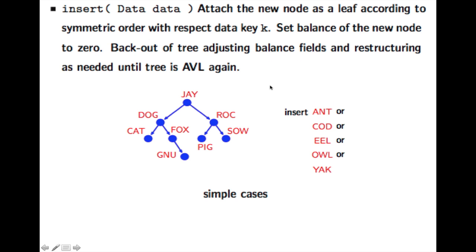So to insert data we just insert it in the usual way as in the binary search tree. Let's say if we want to insert ant, then we go here, ant, smaller than cat. So we add ant here, and we connect it to this node, and we recalculate the balance variables.